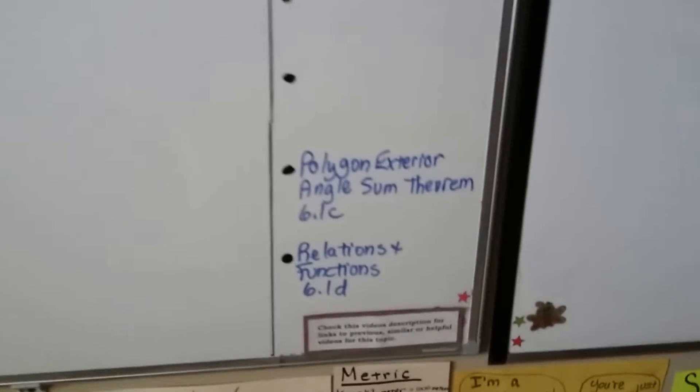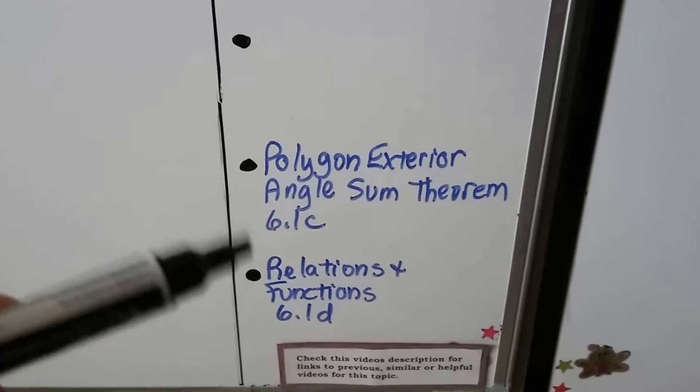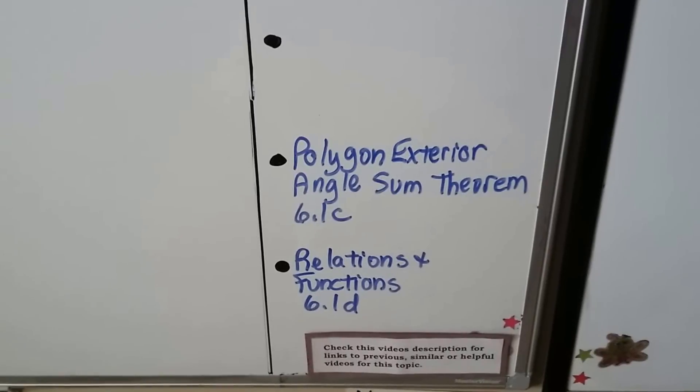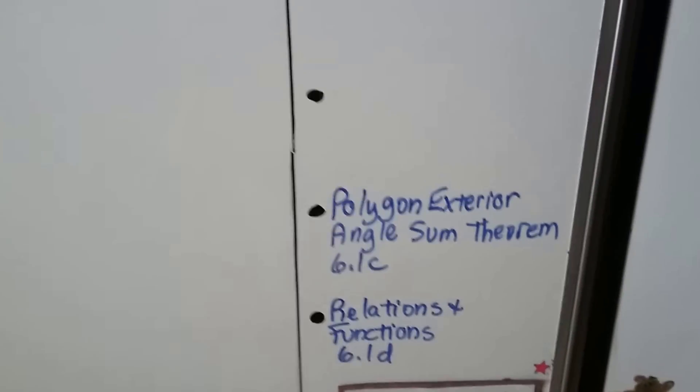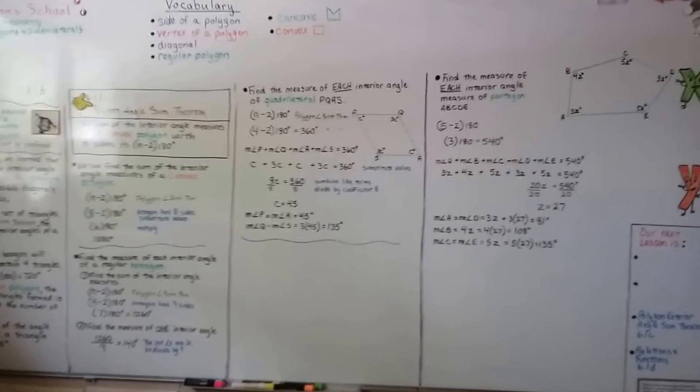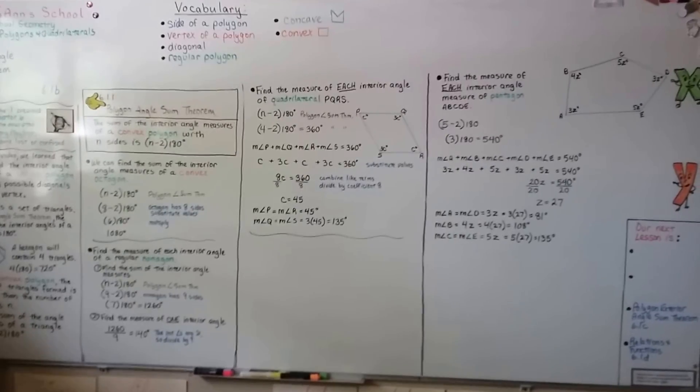Our next lesson is the polygon exterior angle sum theorem. Then we're going to do some relations and functions to remind you of what we did in algebra. Make sure you wrote down this theorem into your theorem notes so you can use it in a proof. I'll see you next time, and please hit that like button for me. Bye.